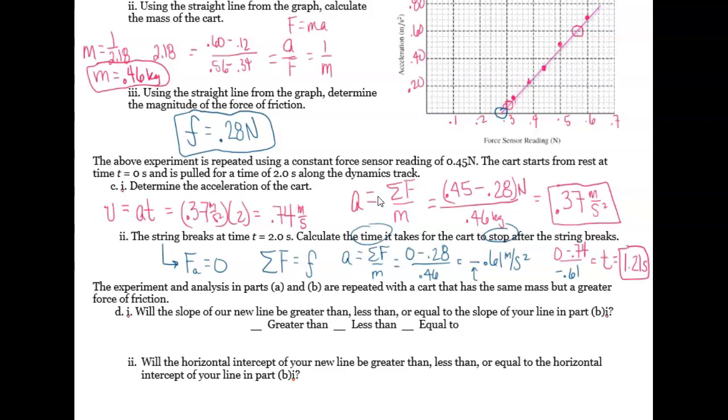All right, the last part, the experiment and analysis in parts A and B are repeated with a cart that has the same mass, but a greater force of friction. Will the slope of our new line be greater than, less than, or equal to the slope of your line in part B? So it has the same mass, which means since mass was our slope, or one over mass was our slope, technically, but still the same, it's going to be equal to. So it's the same mass, which means it's the same slope.